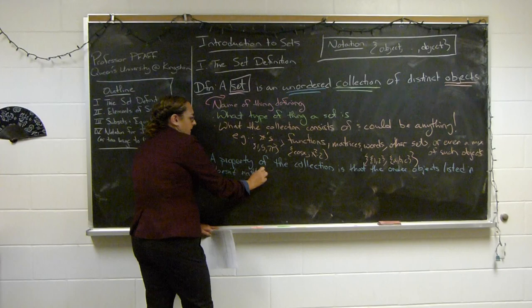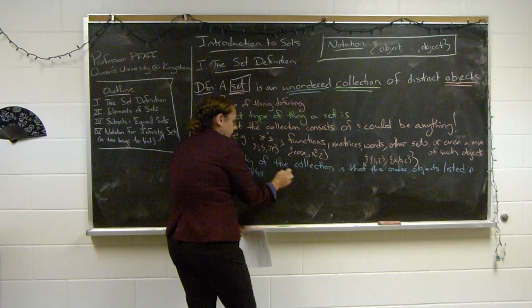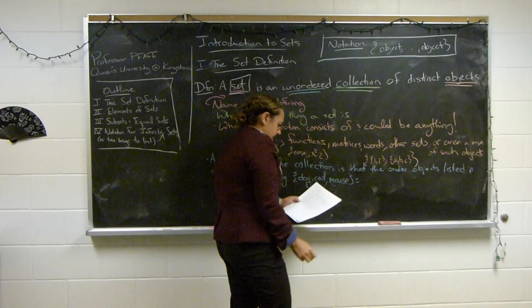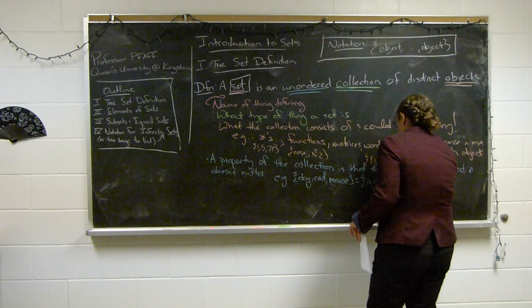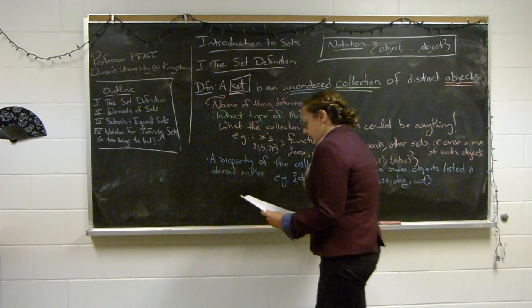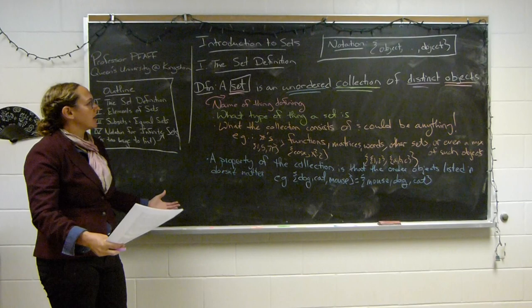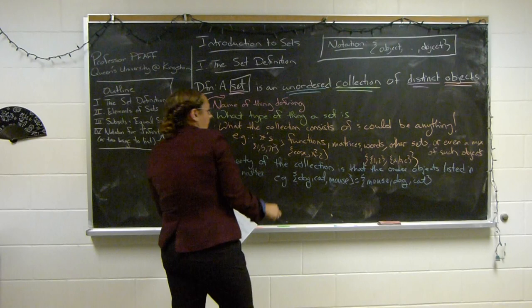For example, the set {dog, cat, mouse} equals the set {mouse, dog, cat}. Now, a property of the objects is that they must be distinct — repetitions of objects in a set are simply ignored. So we just wouldn't write a set like {x, x, y, x, y}.